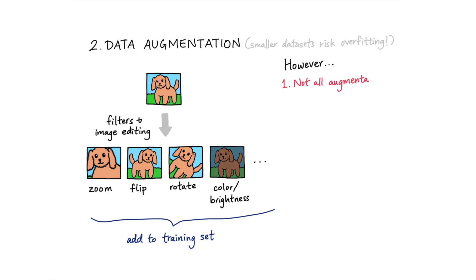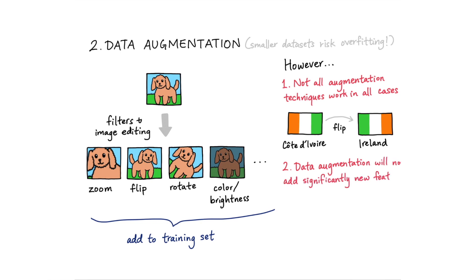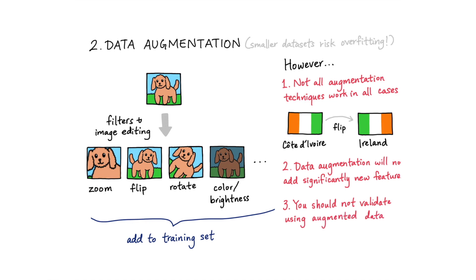However, not all data augmentation techniques may be appropriate for all data sets. If applying one of the filters or image editing techniques changes the label or class of the image, you would not want to do that. If your data set does not contain any data with an important feature, for example a view of an animal from a different angle, data augmentation would probably not help with capturing these features. Also, if you're doing data augmentation, you need to be careful about only validating on the original data set and not on the augmented data set, to make sure the techniques you used are actually suitable for improving your results.